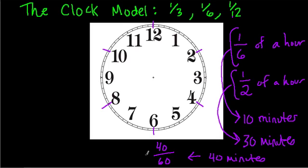That's what 40 minutes represents: four-sixths or two-thirds of an hour. So if we're dealing with a problem like one-sixth plus one-half, we can think of the clock as a model. One-sixth of an hour is 10 minutes, and one-half of an hour is 30 minutes, which equals 40 minutes, or 40 out of 60, bringing us back to two-thirds.